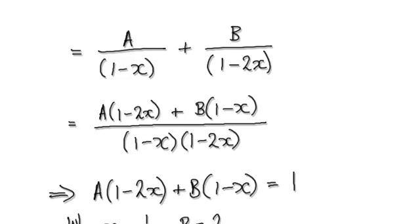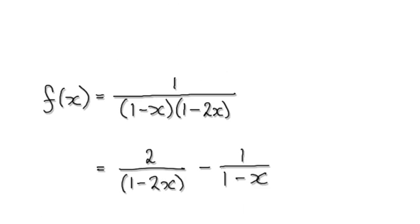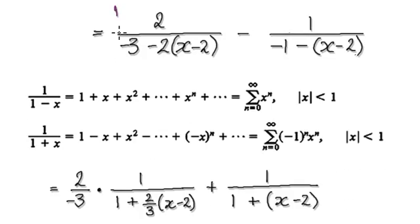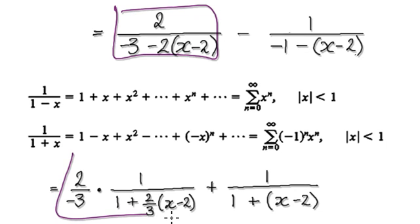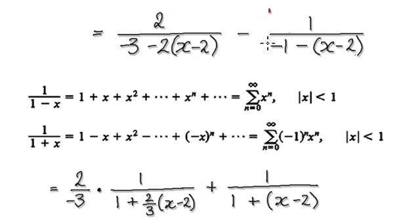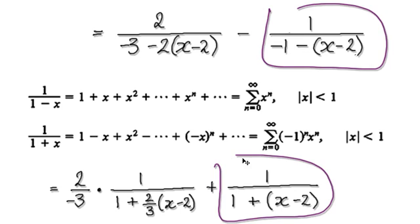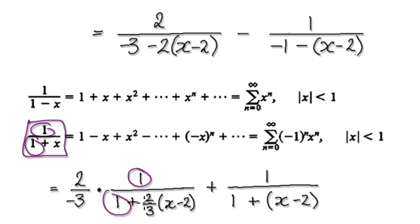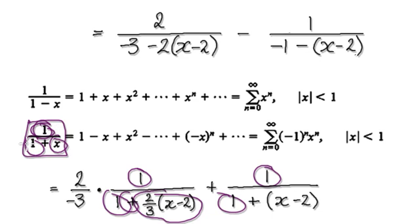Following on from the previous video, we got to this stage where we can re-write this as this, and we can re-write this as this. Now this is of this form. So you've got your 1, 1, and then 1, 1, and then plus the bubble here, plus this x here. And then here you've got 1, 1, 1, 1, plus, and then this bubble here, this bubble here.